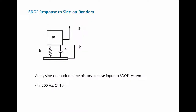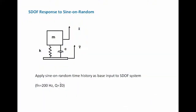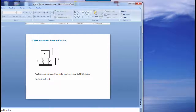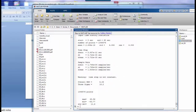Next, we apply the sine-on-random time history as base excitation to a spring-mass system. The system has stiffness k, viscous damping c, base acceleration ÿ, and mass acceleration response ẍ. We set the natural frequency to 200 Hz with Q = 10, and observe how it responds to the sine-on-random time history input.